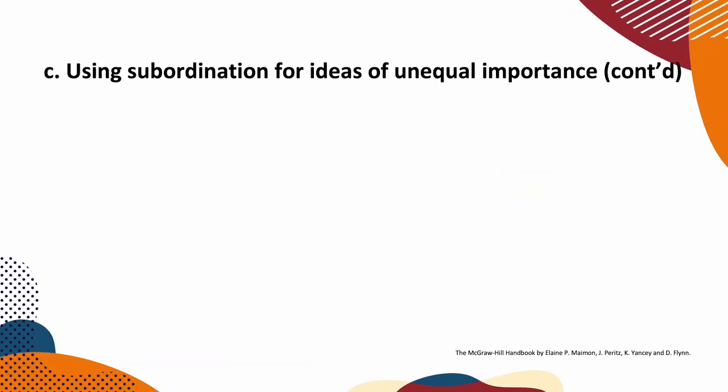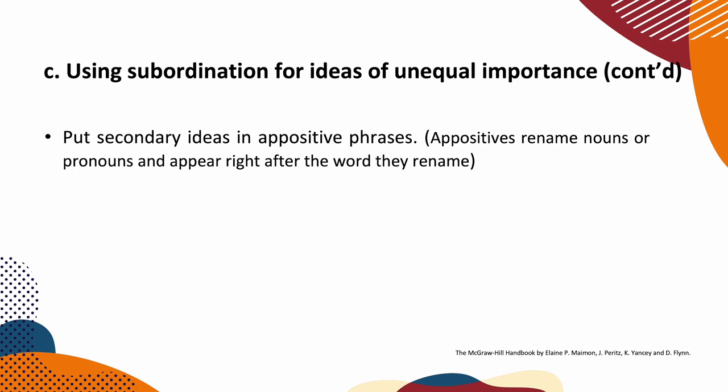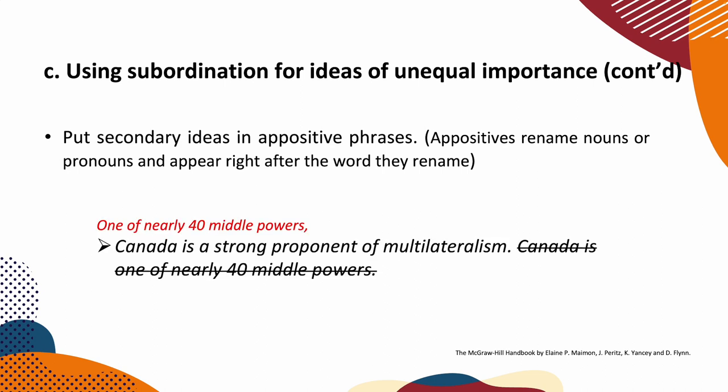Another point: put secondary ideas in appositive phrases. Appositives rename nouns or pronouns and appear right after the word they rename. For example: 'Canada is a strong proponent of multilateralism. Canada is one of nearly 40 middle powers.' We can use an appositive to form: 'One of nearly 40 middle powers, Canada is a strong proponent of multilateralism.'